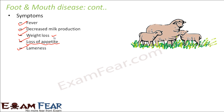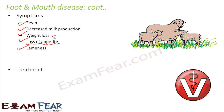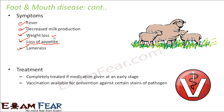The disease primarily impacts the foot and mouth area of the animal. It can be treated if medication is given at an early stage. Vaccination is available for prevention, but only against certain strains of the pathogen. Since there are seven strains in total and vaccination may cover only two or three, if a fourth or fifth strain attacks, the animal won't be protected. Therefore, vaccination is available but not fully effective.